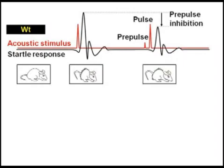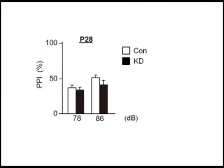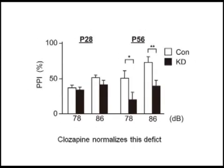Then, what is its impact on behavior? Let's show one example of pre-pulse inhibition, the paradigm that reflects information processing or sensory motor gating. Again, in mice with DISC-1 knockdown, we did not observe change of pre-pulse inhibition at postnatal day 28, but observed a much more robust change at postnatal day 56.